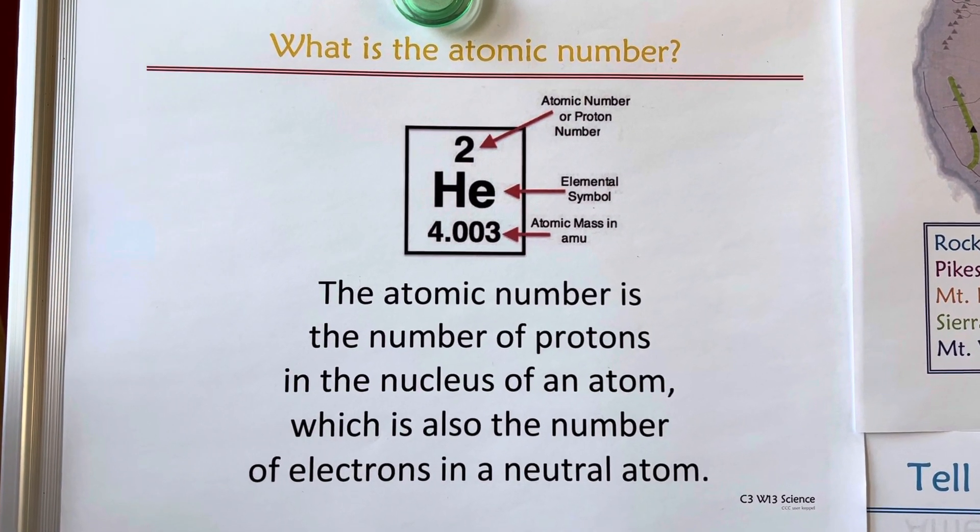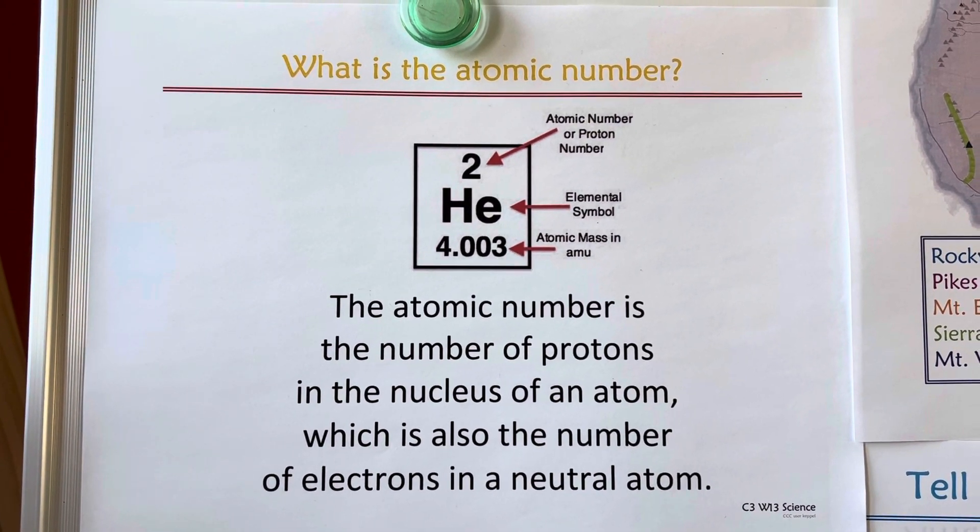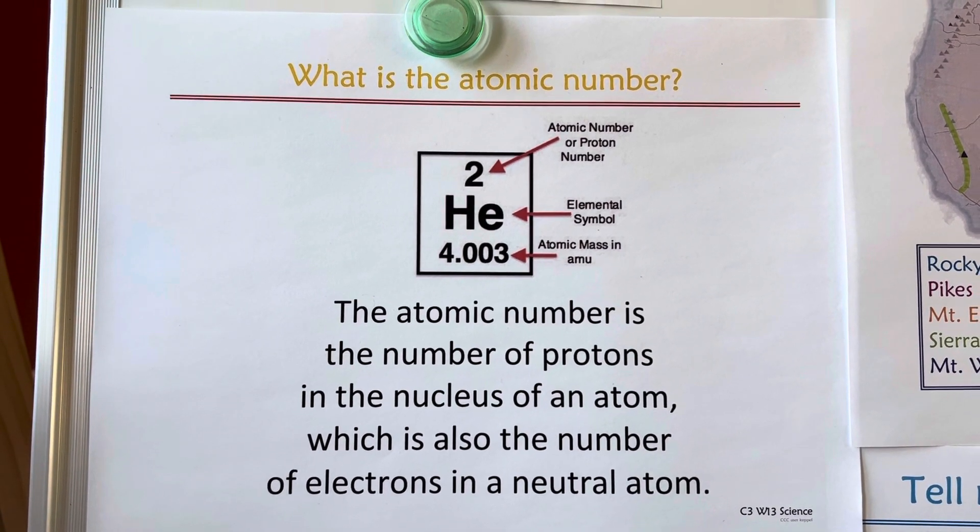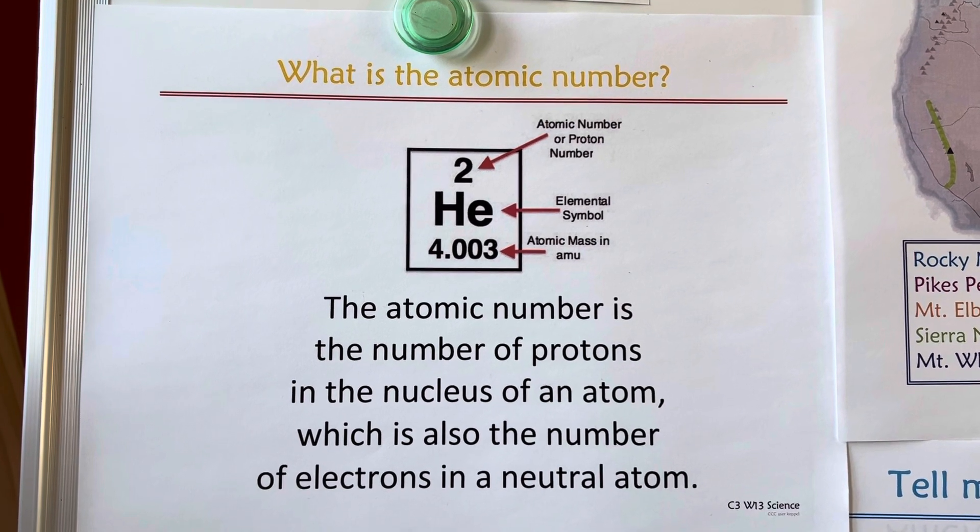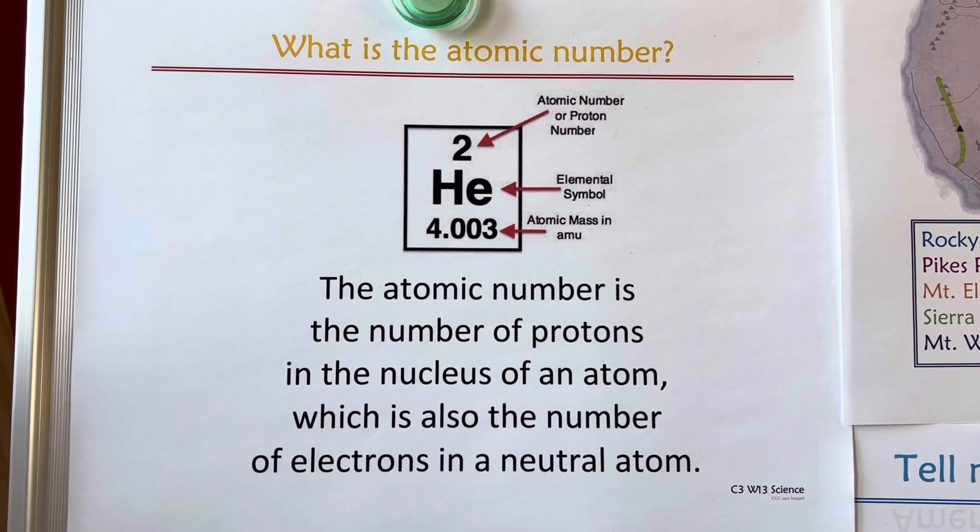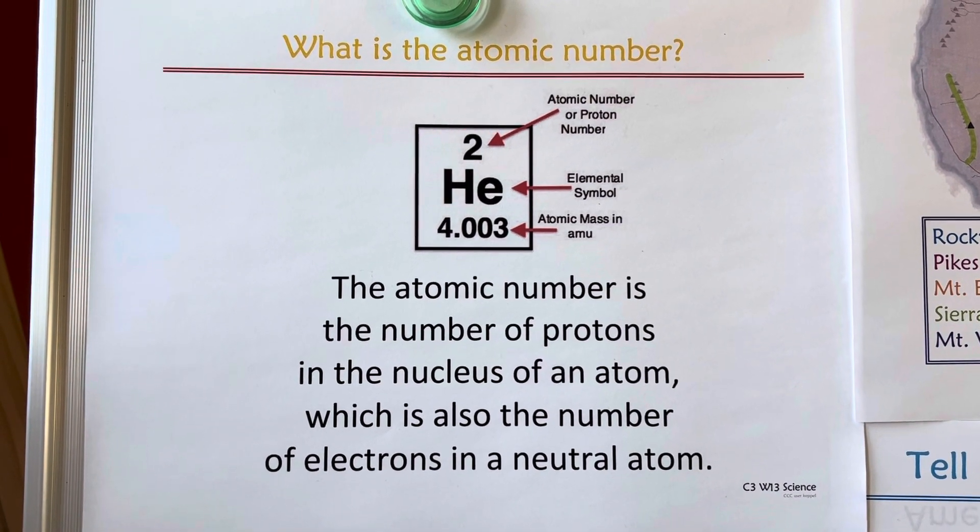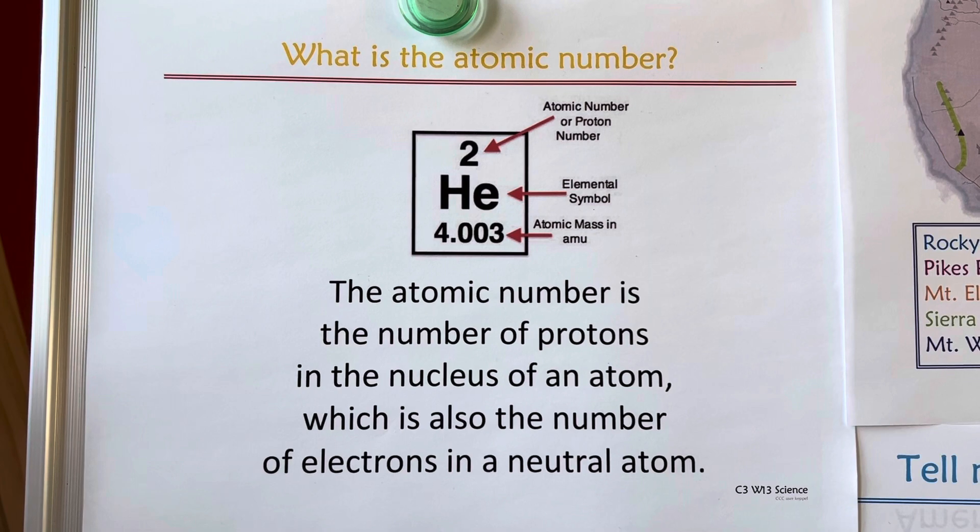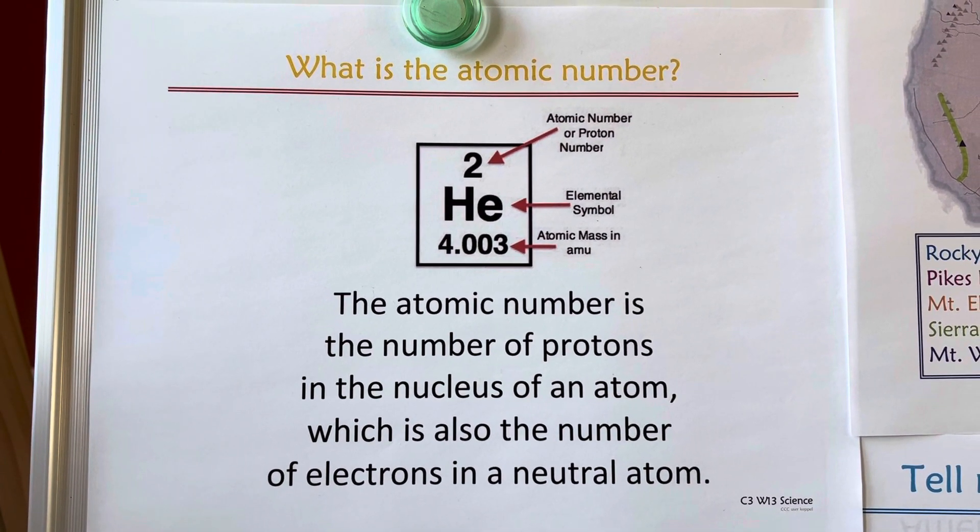The atomic number is the number of protons in the nucleus of an atom, which is also the number of electrons in a neutral atom.